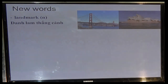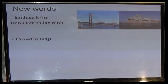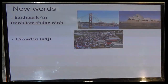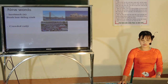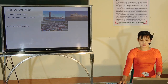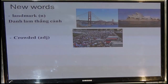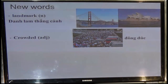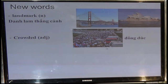Good. Now the second word: Crowded. Now look at the picture here — the cities are very crowded. So crowded, what does it mean? Như vậy thì crowded là gì nào các em? Crowded, it means đông đúc. Crowded. Again: Crowded.